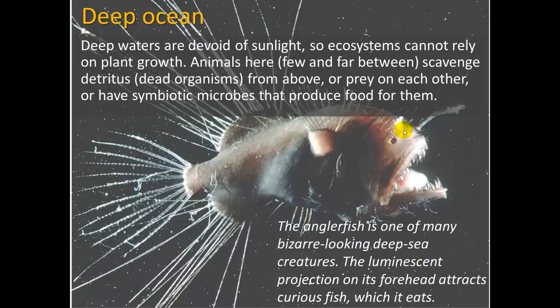Deep waters are devoid of sunlight, so ecosystems cannot rely on plant growth. Animals here scavenge detritus or dead organisms from above, prey on each other, or have symbiotic microbes that produce food for them. The anglerfish is one of many bizarre-looking deep-sea creatures — its luminescent projection on its forehead attracts curious fish, which it eats.